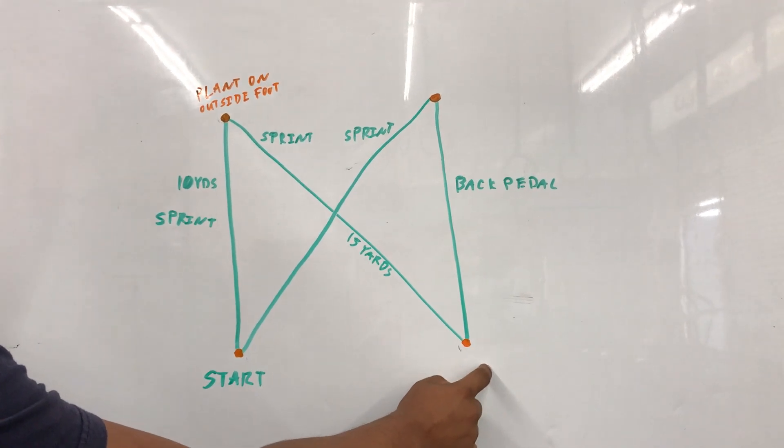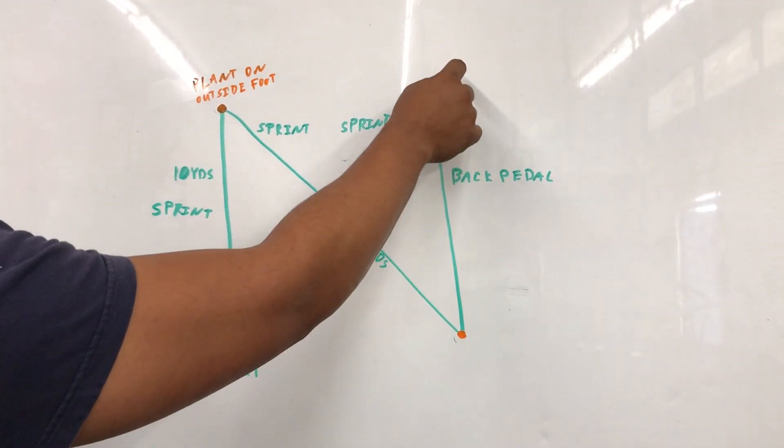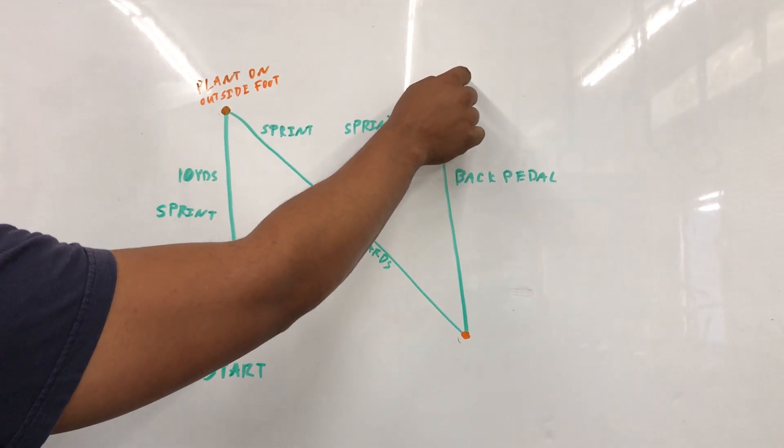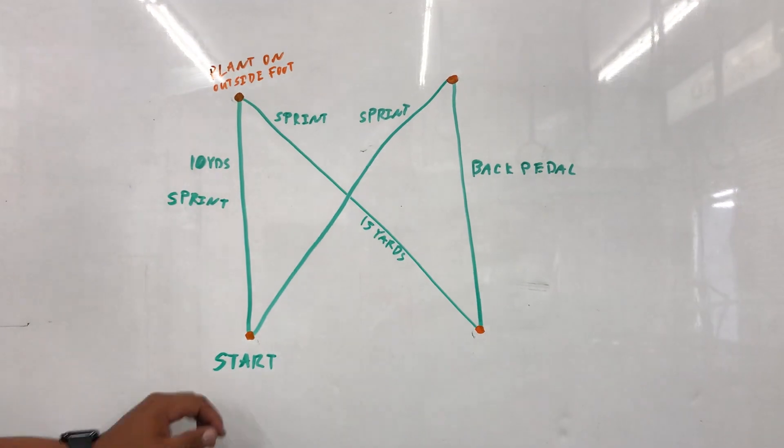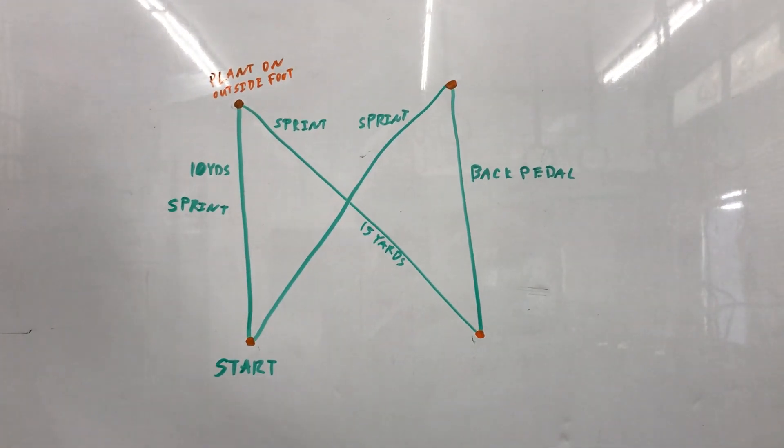we are planting on that outside foot, and then we are backpedaling from cone number three. Again, as we plant, we finish through cone number one for one set.